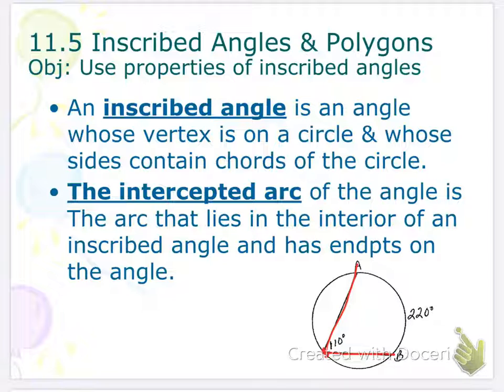The intercepted arc of the angle is the arc that lies on the interior of an inscribed angle and has endpoints on the angle. So here you go, you see this is the intercepted arc. That's this portion right here.